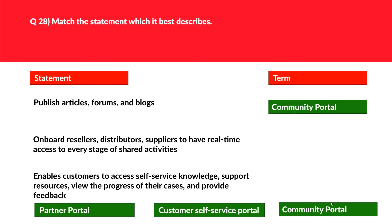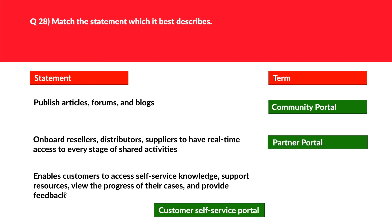Let's look at statement 2: onboard resellers, distributors, and suppliers to have real-time access to every stage of shared activities. Remember, whenever we onboard anyone, it's for partners. Keywords like resellers, distributors, and suppliers are all related to partners. Hence, partner portal should be the correct fit. We'll move this here. Let's look at the last statement.